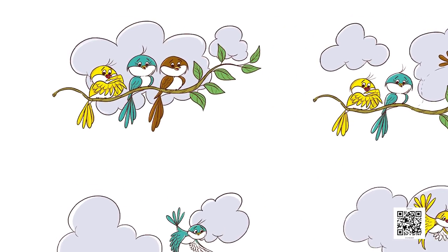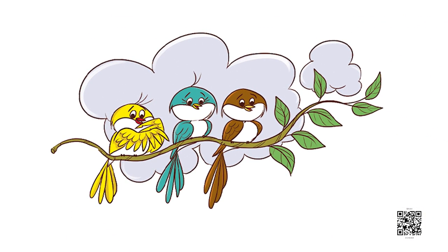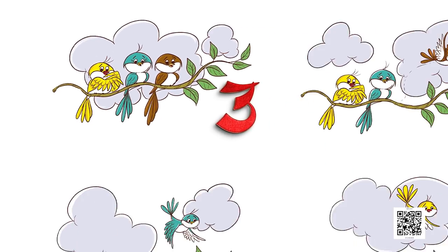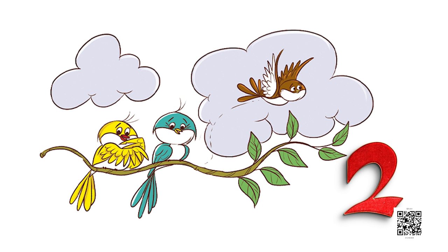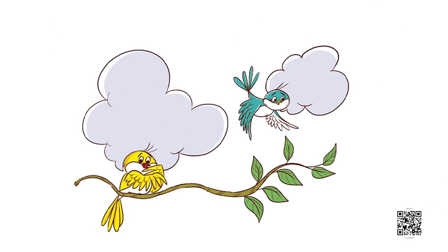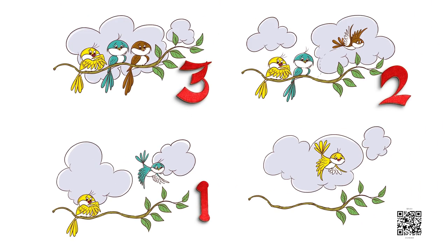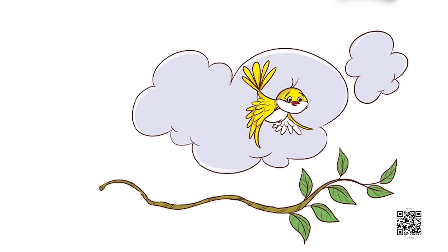Dear learners, we all must have a balanced diet, otherwise we will become ill and unhealthy. So when something vanishes, we say we have zero. Let's see more examples of zero. Arnav, can you see some birds on this branch? How many birds are there? Three. One flew away — two are left. One more flew away — one is left. And when the last bird also flew away, we have zero birds.